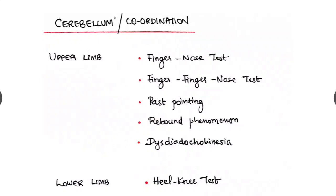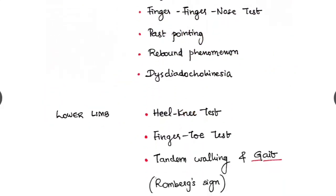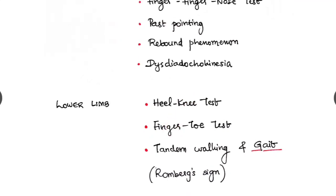Next is the cerebellum or coordination. The upper limb and the lower limb cerebellar signs we have to look. Upper limb, we do the test like finger-nose test, finger-finger-nose test, past pointing, rebound phenomenon and disdiadochokinesia. In the lower limb we make the patient to do the heel-knee test, finger-toe test, tandem walking and importantly the gait.